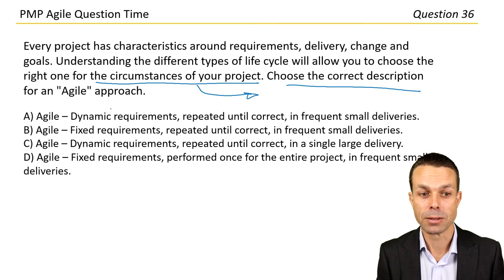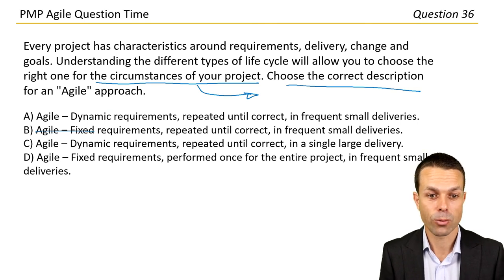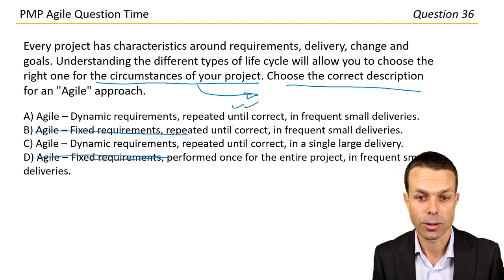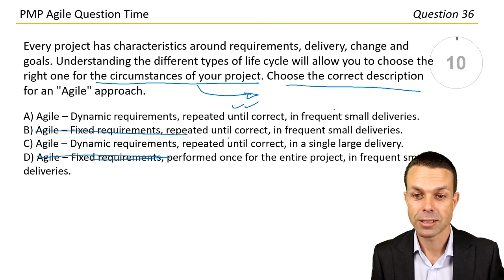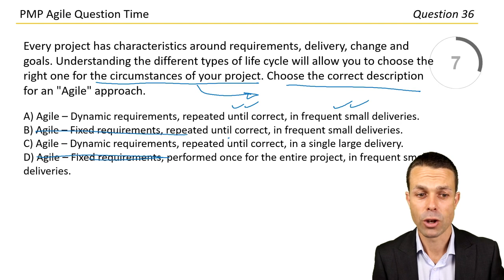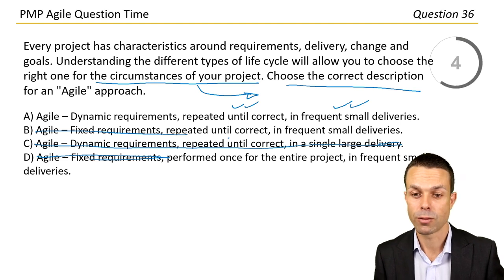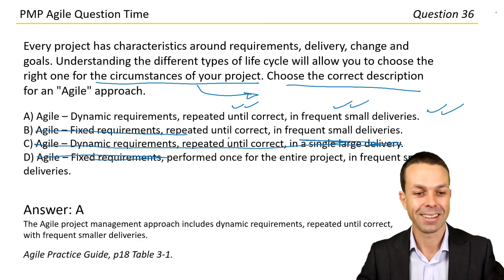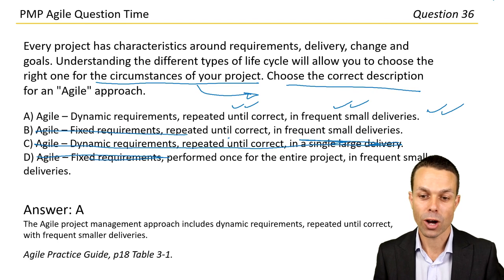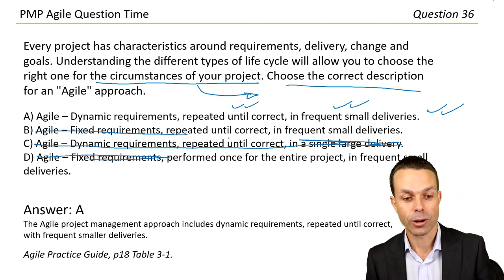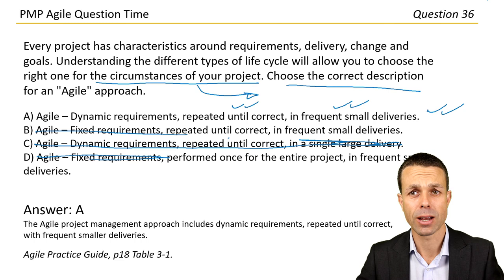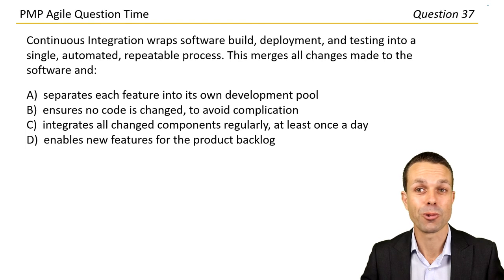Answer A: the agile project management approach includes dynamic requirements, repeated until correct, with frequent smaller deliveries. This is from the Agile Practice Guide, a great book from the Project Management Institute and the Agile Alliance. The other options include fixed requirements or a single large delivery, which do not describe agile.